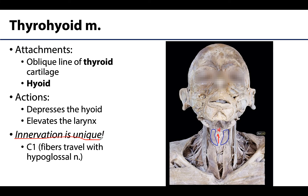I would always suggest putting stars or hearts next to any time you have something unique in terms of innervation or actions, as this almost always finds its way into assessments. The thyrohyoid is innervated by fibers from the C1 spinal nerve that are not associated with ansa cervicalis, which is the innervation for the other three infrahyoid muscles. These C1 fibers will travel with — or hitchhike with — the hypoglossal nerve.